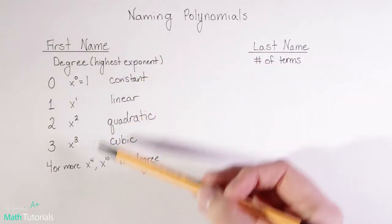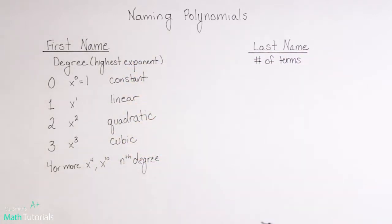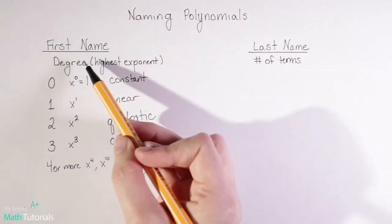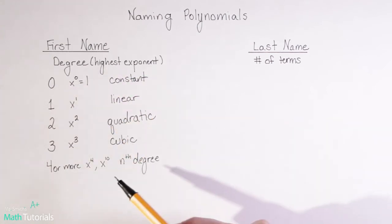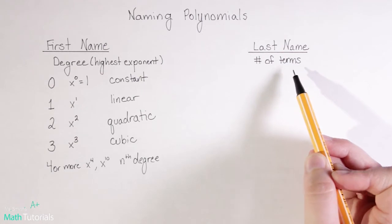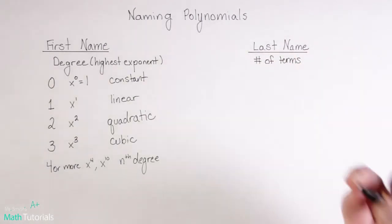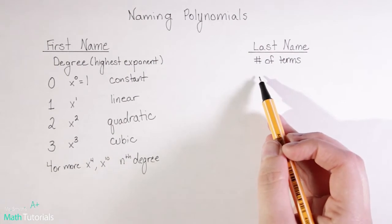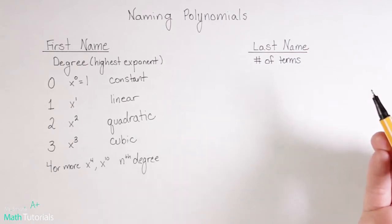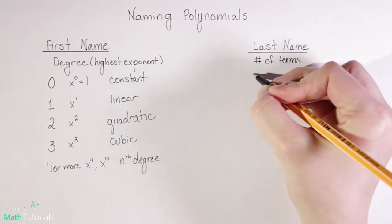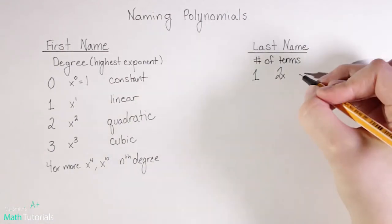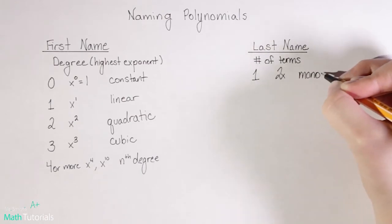So that's all of our potential first names for a polynomial. Looking at our possible last names: in the same way we look at degree — the highest exponent — for our first name, we look at the number of terms to find the last name. We could have one term; for example, 2x, and we would call that a monomial.